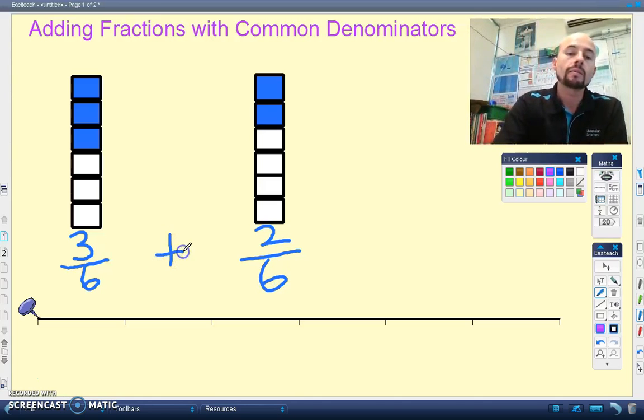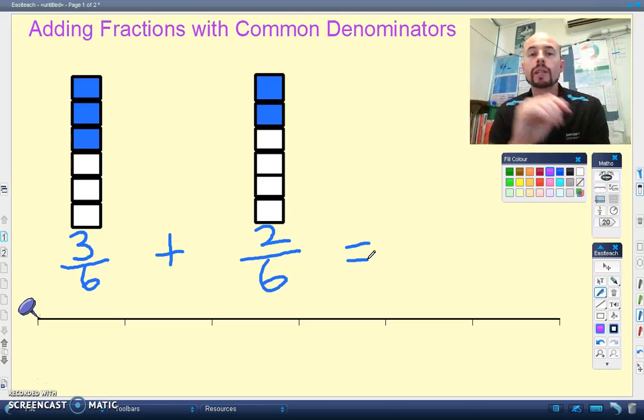When we add them together, we only add the numerator. That's the top number. So we're counting how many fractions, how many pieces are shaded.